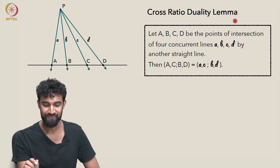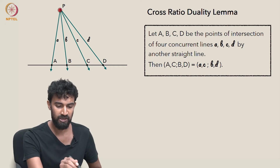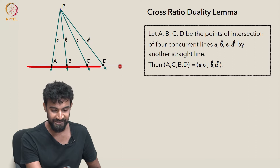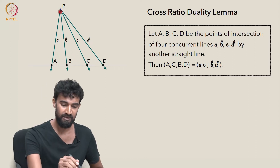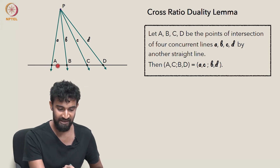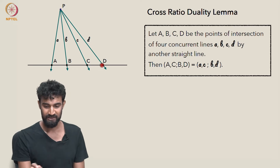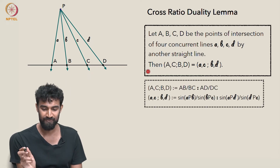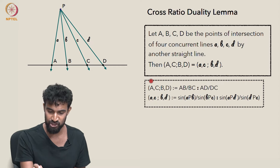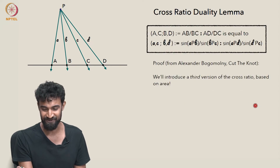Now, the cross-ratio duality theorem tells us the following: if we take four concurrent coplanar lines and intersect them with another line, calling the points of intersection A, B, C, and D, then the cross-ratio of the points A, B, C, D is equal to the cross-ratio of the lines A, B, C, D. So these two notions of cross-ratio coincide. That's what we want to prove now, and I'll keep both definitions visible for reference since it's a complicated definition that's easy to forget.